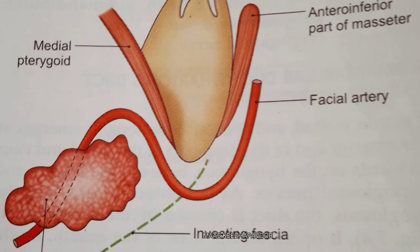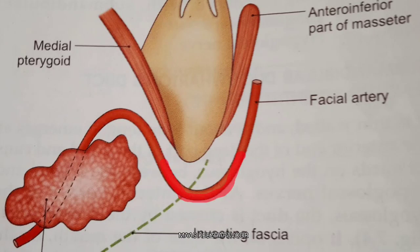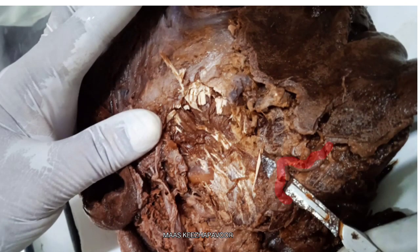It makes an S-bend — two loops: one winding down over the submandibular gland with convexity upwards, and the other winding up over the base of mandible with convexity downwards. It then appears in the face by crossing the base of the mandible at the anteroinferior angle of the masseter.